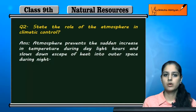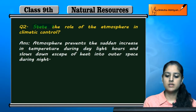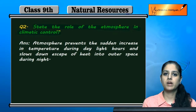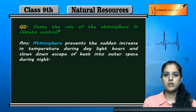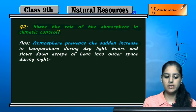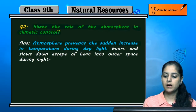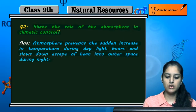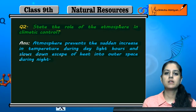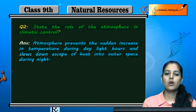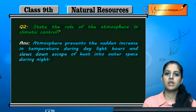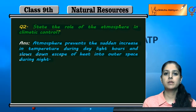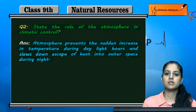Question two: State the role of atmosphere in climatic control. The atmosphere prevents the sudden increase in temperature during daylight hours and slows down the escape of heat into outer space during the night. During daytime it prevents sudden temperature increase, and at night the heat from the earth is prevented from escaping by the atmosphere, so ultimately it maintains a balanced temperature.